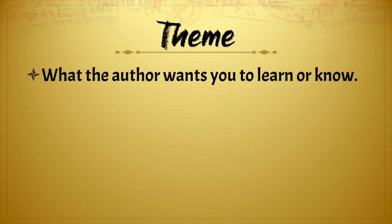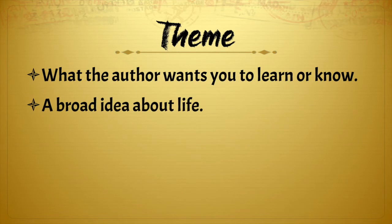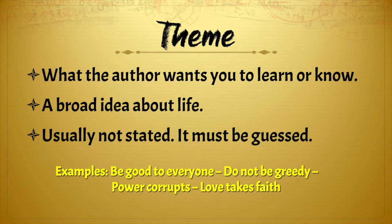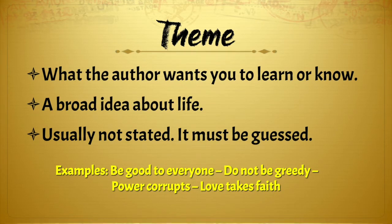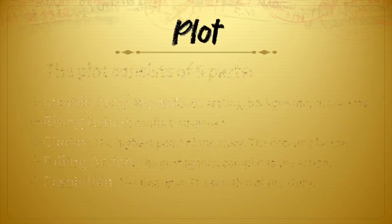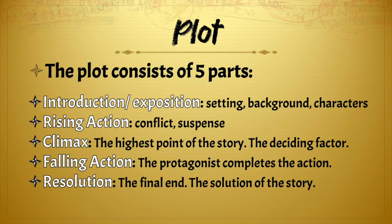Theme is what the author wants you to learn or know — a broad idea about life, usually not stated directly and must be guessed. Examples include: be good to everyone, do not be greedy, power corrupts, love takes faith, etc. Now let's take a look at the plot. The plot consists of five parts: introduction or exposition, rising action, climax, falling action, and resolution.